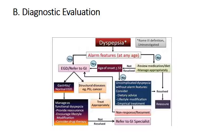If no alarm feature is found, review medication and diet — especially NSAIDs — and manage appropriately: consider dietary advice, lifestyle modification, or stopping offending drugs like NSAIDs. If the condition resolves, reassure the patient. If not, move to the next step. If the patient is below 55 years old with uncomplicated dyspepsia and no alarm features, consider dietary advice, lifestyle modification, and empirical treatment. If symptoms resolve, reassure; if not, proceed to the next step.